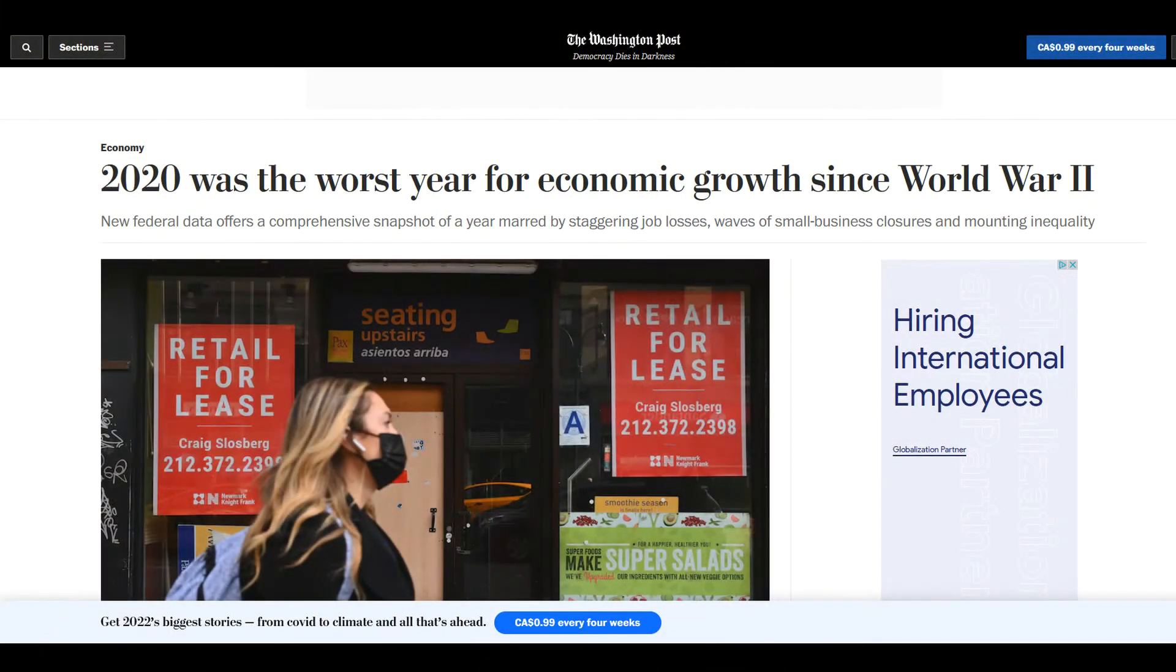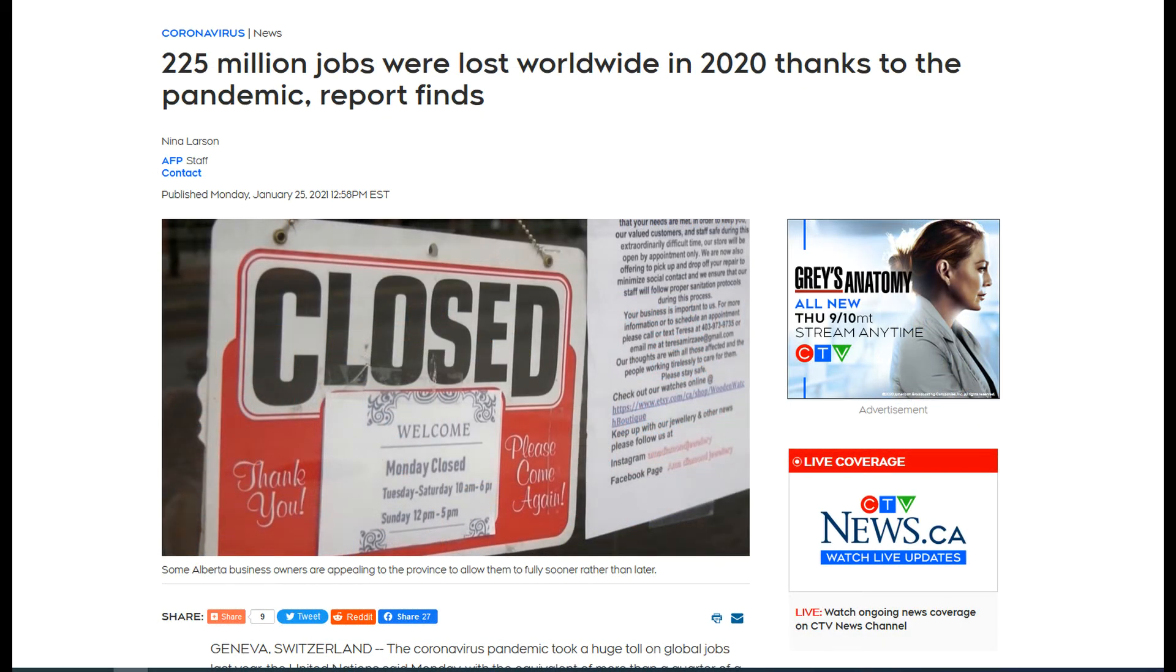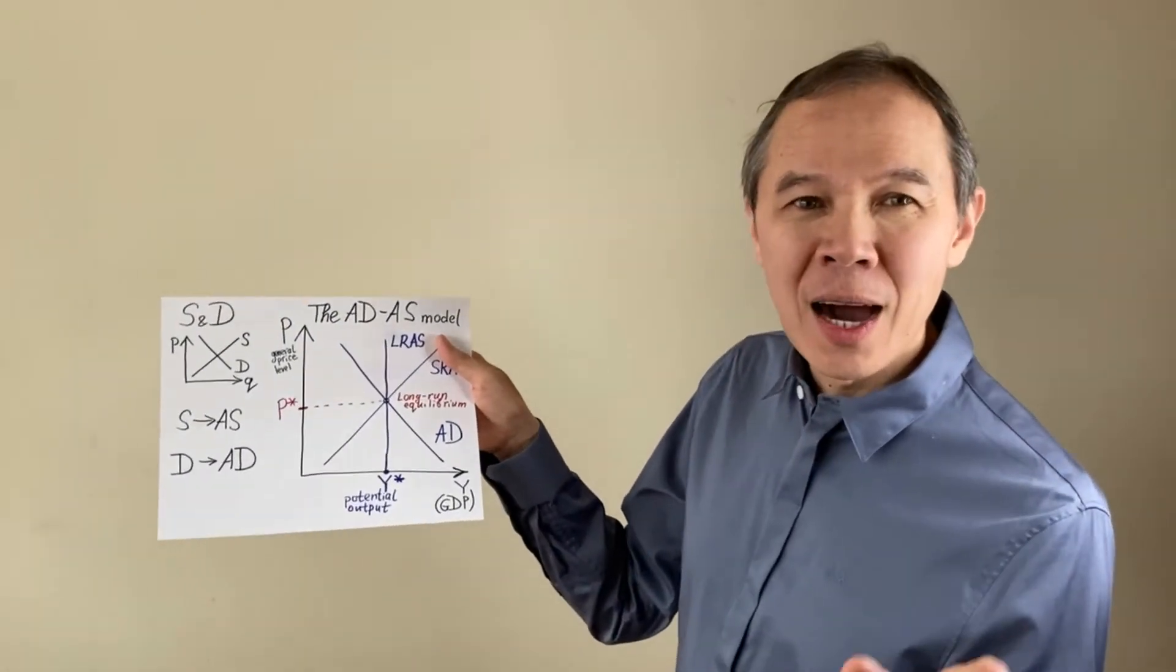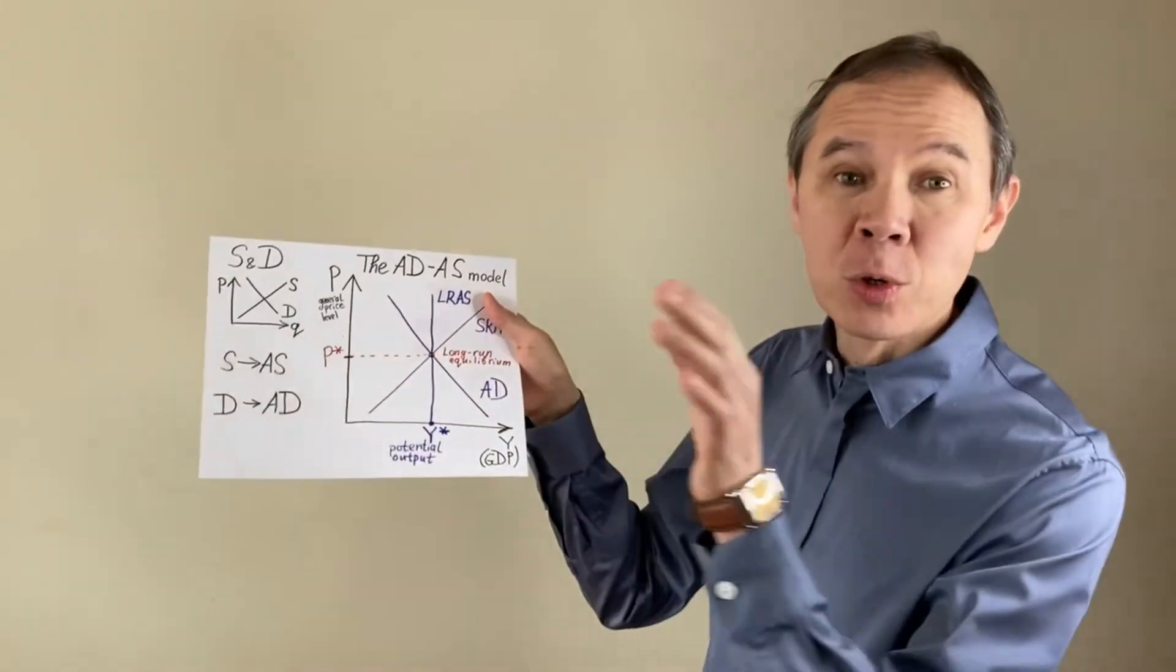The long-run equilibrium is how things should be. But real life is often not how it should be. The real-life economy is often abnormal and unstable. For example, do you remember the year 2020? The pandemic, the economic meltdown and all-time high unemployment. Can we say that in 2020 the economy was in the long-run equilibrium? That it was normal and stable? No, in 2020 the economy was not in the long-run equilibrium. It wasn't normal and it wasn't stable. The economy was in a severe recession.